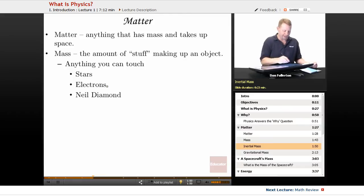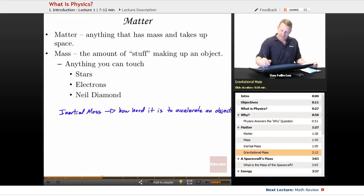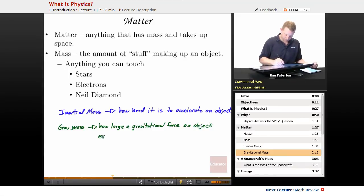Now as we talk about matter and mass, often times we use them interchangeably. Matter is the stuff. Mass is the amount of stuff making up the object. And we're going to talk about two kinds of mass. We're going to talk about inertial mass, which is determined by how hard it is to accelerate an object. And we're going to be talking about gravitational mass, which refers to how large a gravitational force an object experiences.